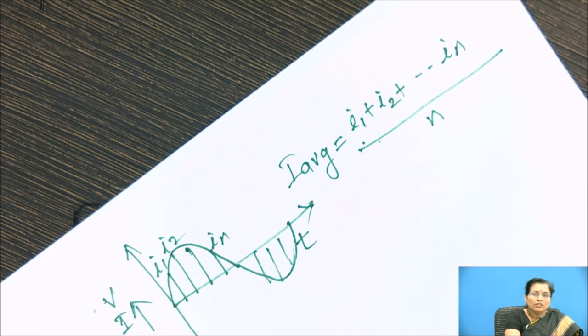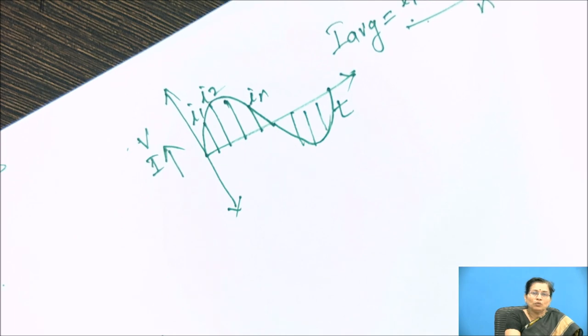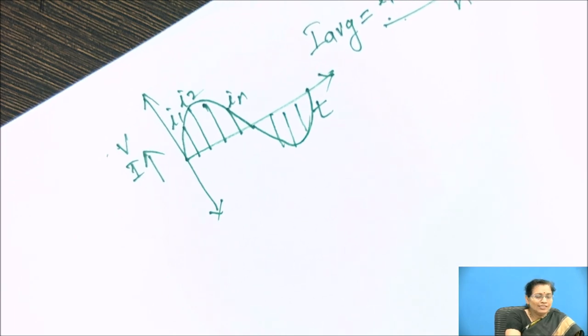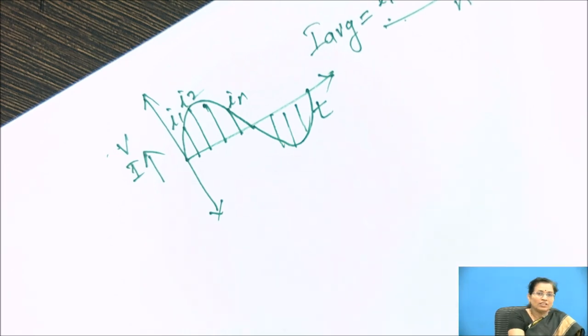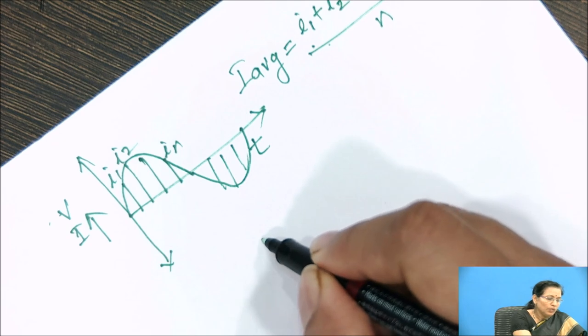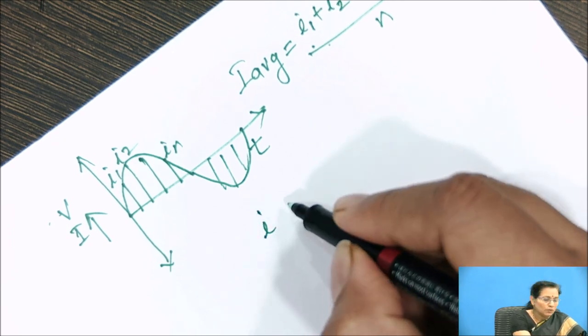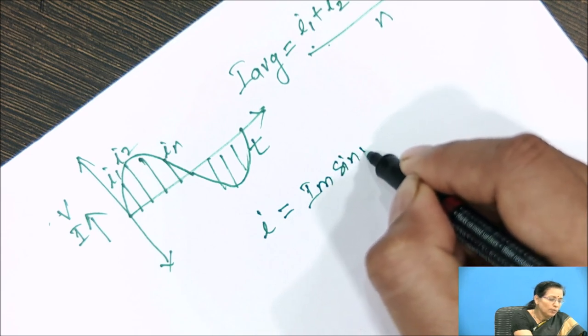Now if we want to calculate the average value for AC cycle by analytical method. So this is the graphical method. So by analytical method, we are going to consider the value I equal to Im sin omega t.